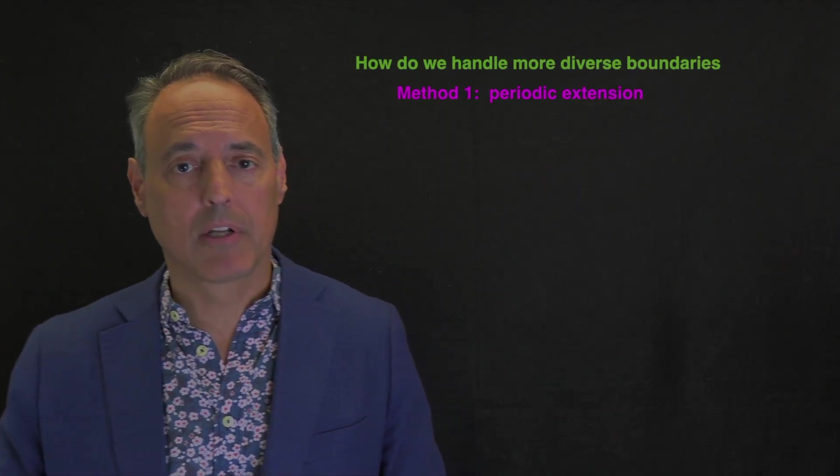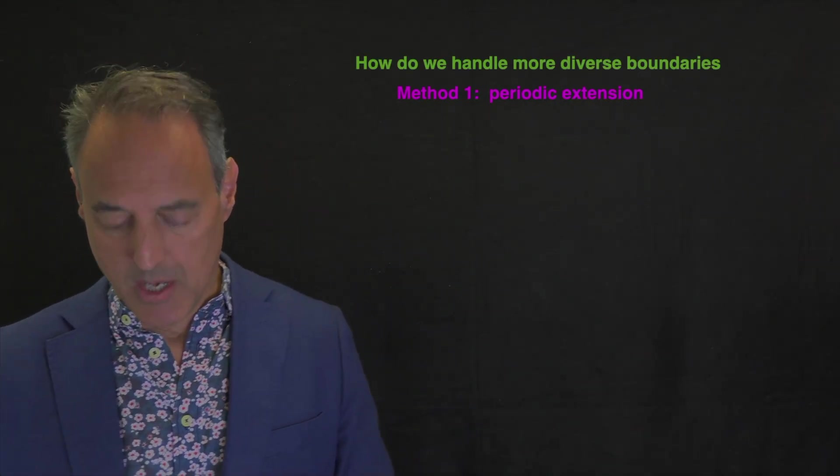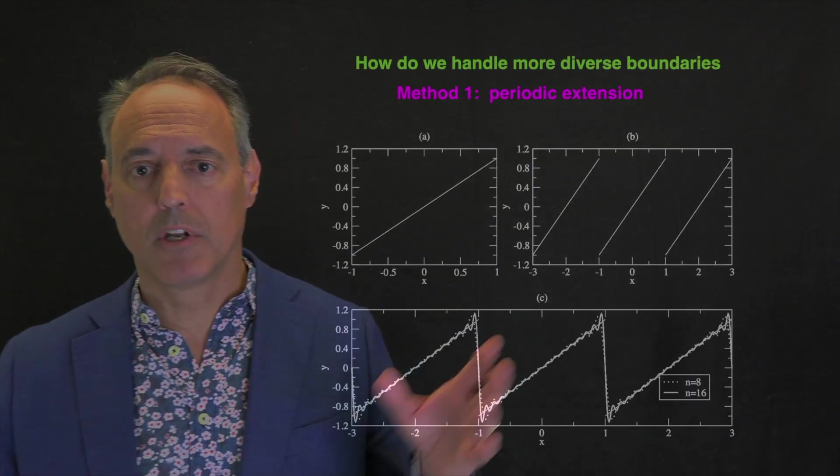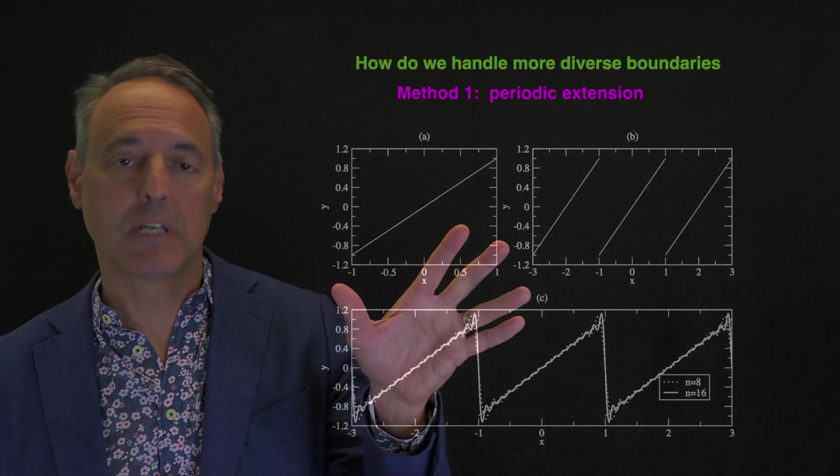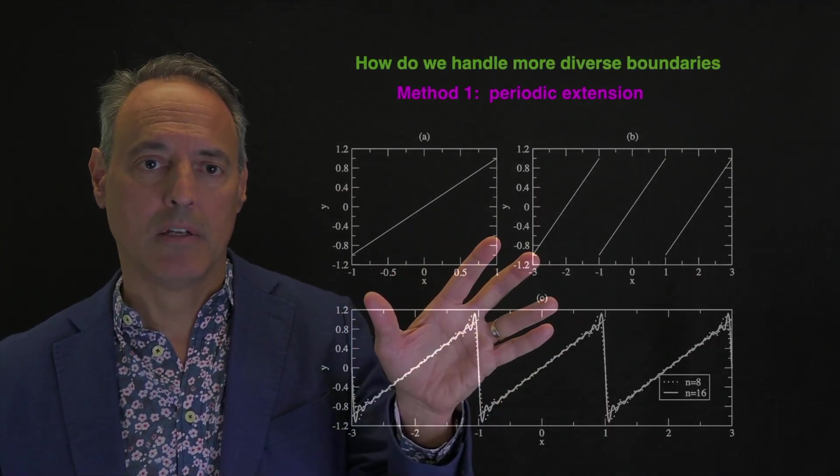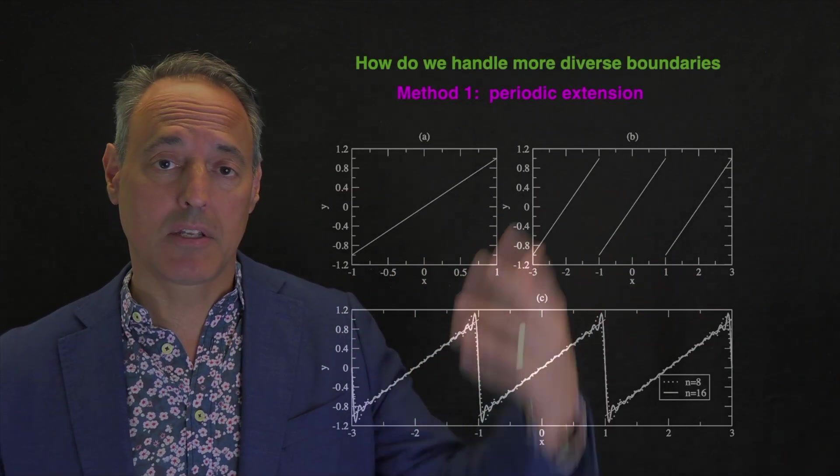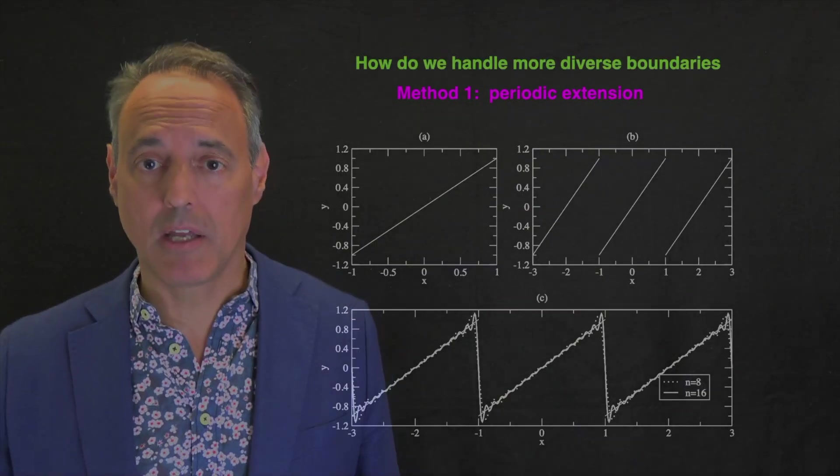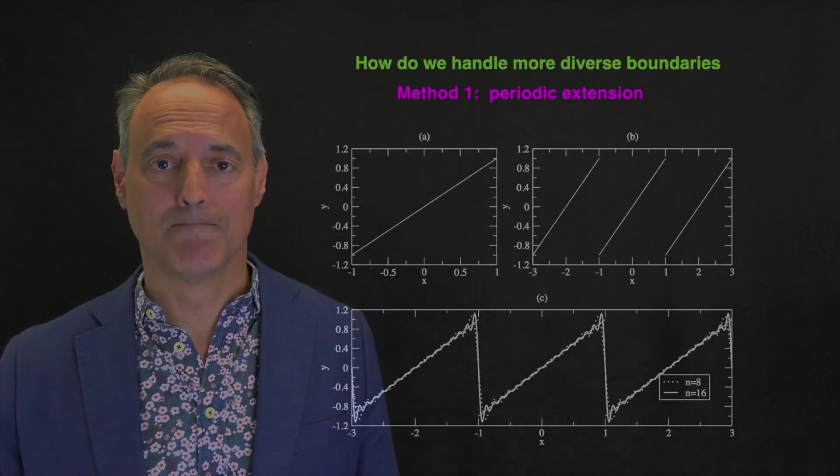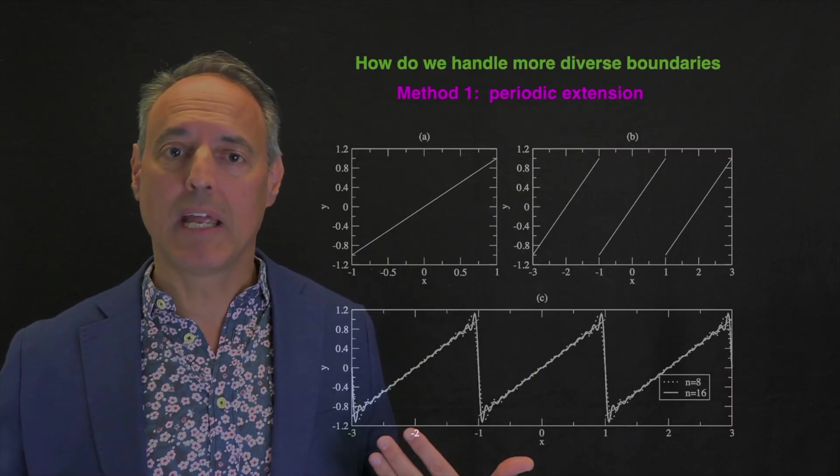There are different methods for handling boundaries. One method is called periodic extension. You just simply say, I'm working on a domain that's of certain size, and it's not periodic. Well, I'll just do a periodic extension. I'll make it periodic and just take the interval I'm interested in. So this is one way to handle it.